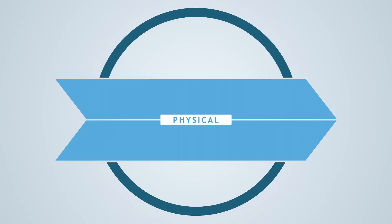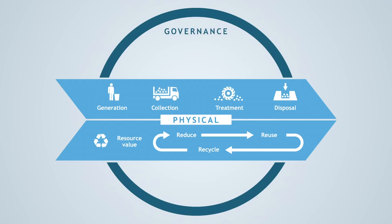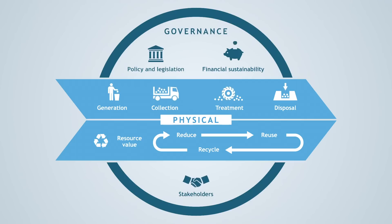In this course, we will cover the two dimensions of solid waste management. The first involves understanding the physical components of a municipal solid waste management service. We will discuss aspects of the whole chain, starting from generation of waste, to collection of waste, treatment, and disposal. The second dimension analyzes the governance aspects, which include the roles and responsibilities of stakeholders, the financing mechanisms, legislation and policies, as well as sociocultural aspects.